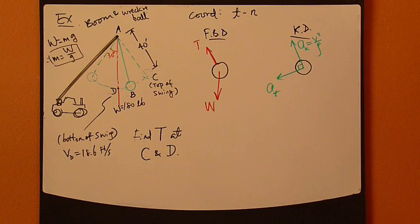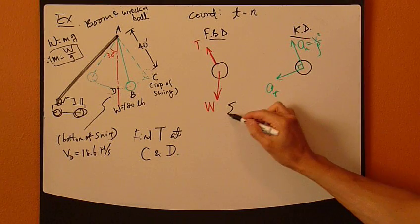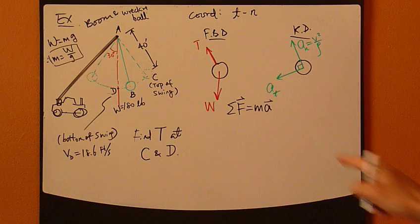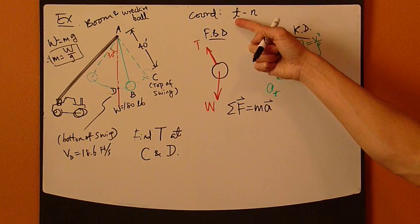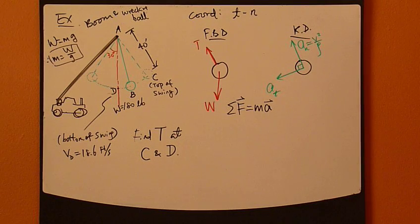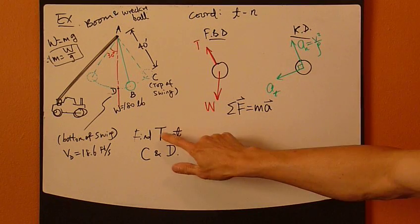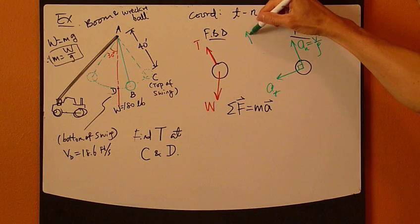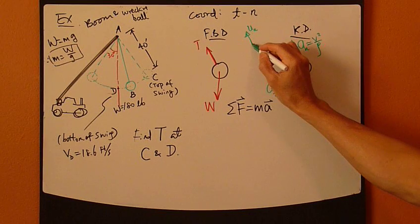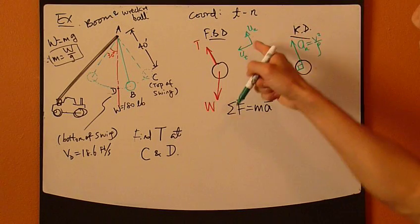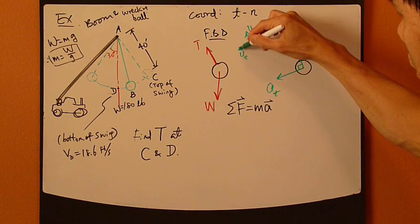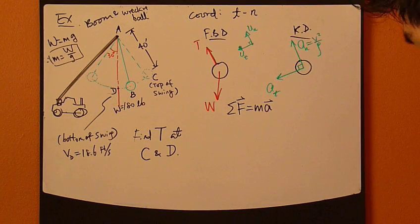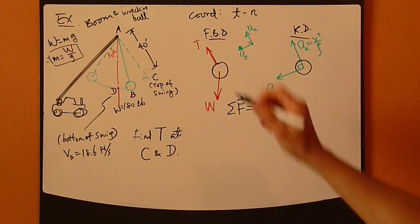Okay, so now, this is the free body and kinetic diagram, and we move on to the next step, which is Newton's second law. F equals Ma. So now, we apply this vector equation into each of the two principal directions. However, now, recognize that the unknown here is T, tension. Now, tension is already in the normal direction.